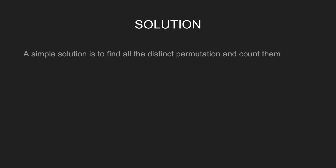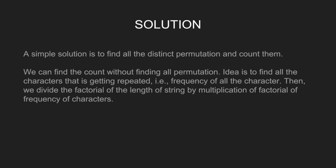A simple solution is to find all the distinct permutations and count them. However, we can find the count without finding all the permutations. The idea is to find all the characters that are getting repeated, i.e., the frequency of all the characters. Then we divide the factorial of the length of the string by the multiplication of the factorial of the frequency of each character.